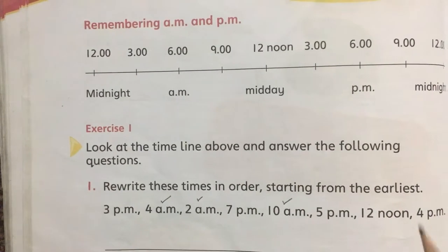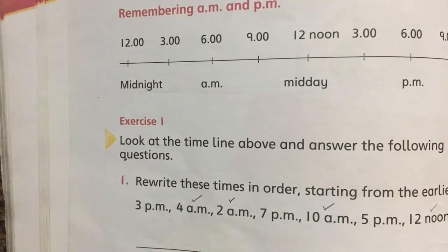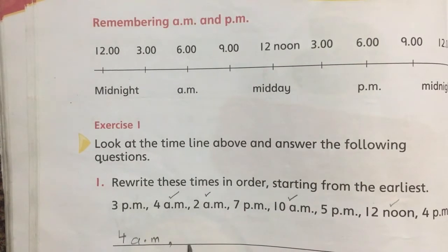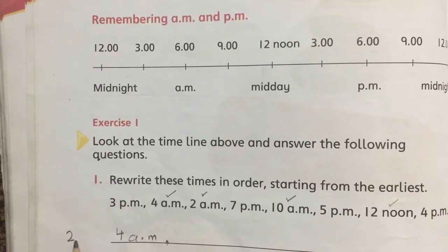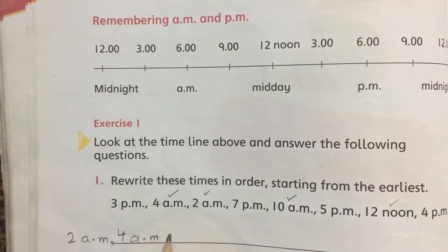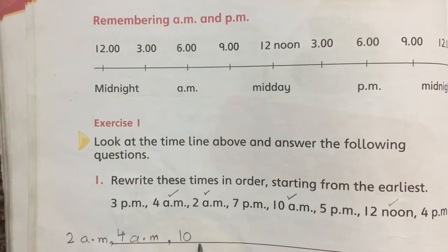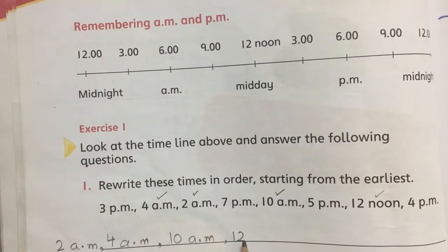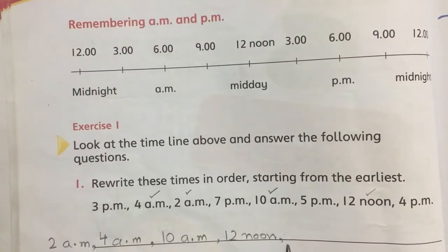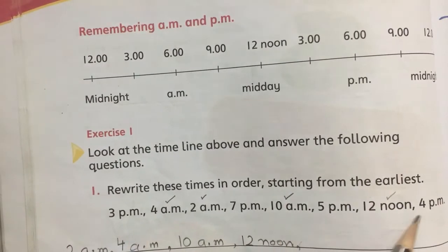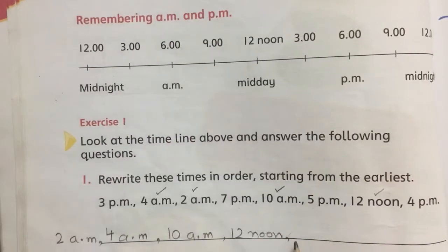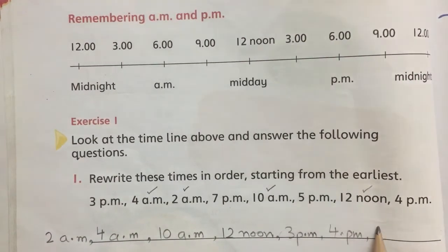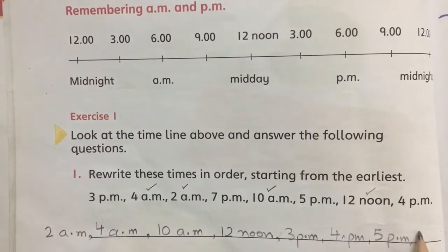After that, 12 noon starts. So the first time is 2 AM — صبح کے جو چار بجتے ہیں — then 4 AM. سب سے پہلے 2 AM لکھنا ہے جو رات کے دو بجے ہوتے ہیں، then 4 AM، then 10 AM جو morning time ہوتا ہے جس وقت آپ school میں ہوتے ہیں، then 12 noon دوپہر کے بارہ بجے، اس کے بعد PM والے time start ہوتے ہیں: 3 PM، 4 PM، 5 PM، and 7 PM.